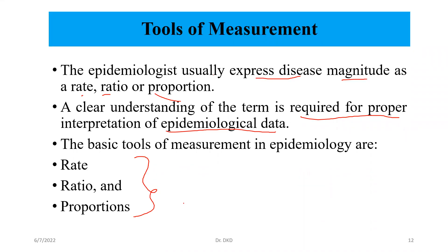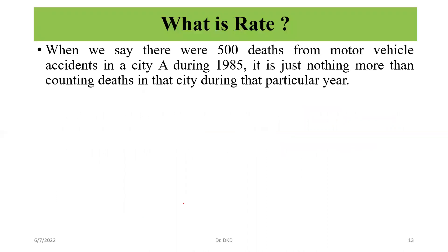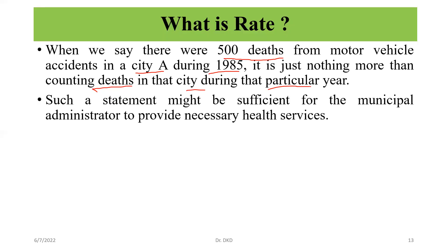Now we will discuss rate first. When we say there were 500 deaths from motor vehicle accidents in a city during 1985, it is nothing more than counting deaths in that city during that particular period. We can say 500 deaths — it means that it is only counting.